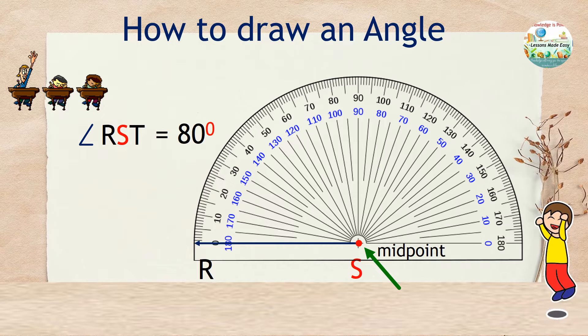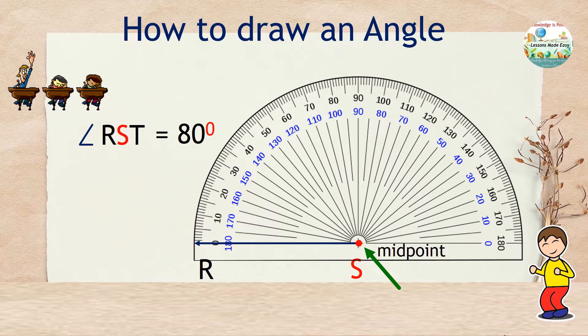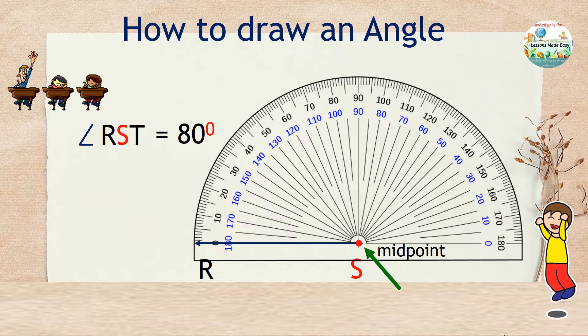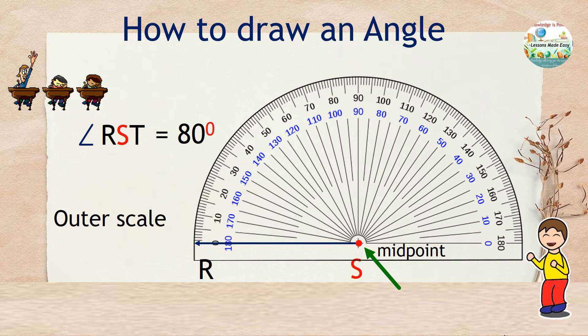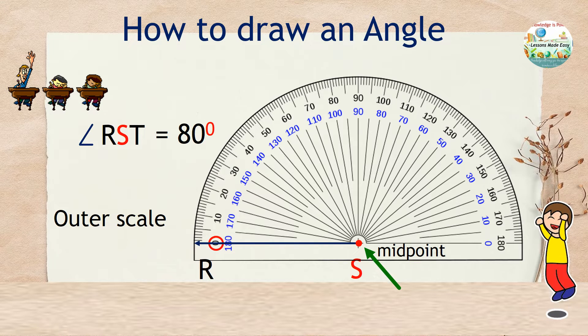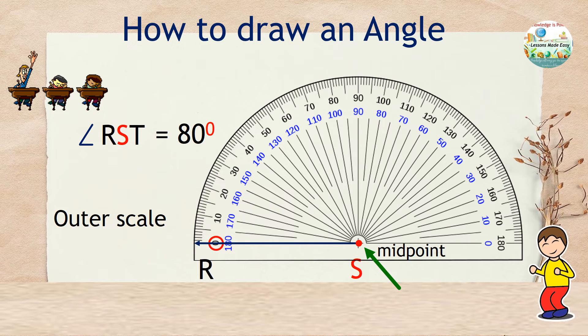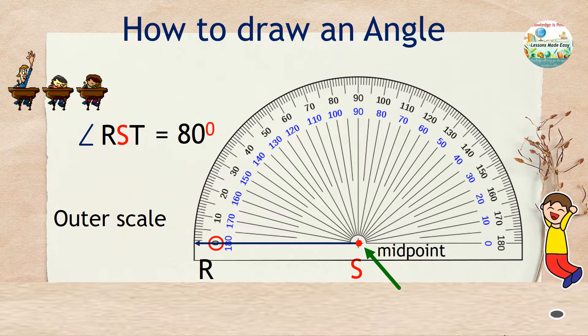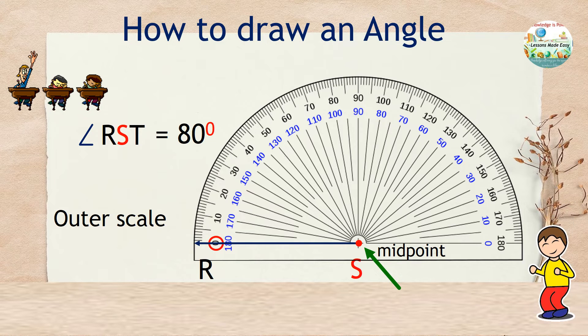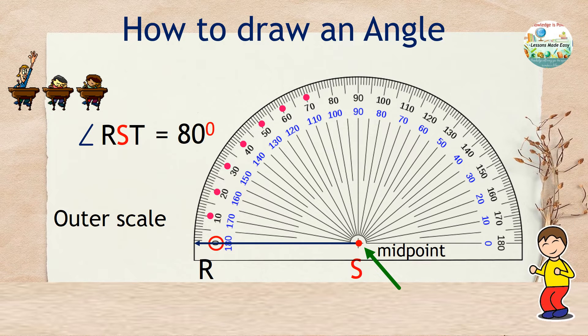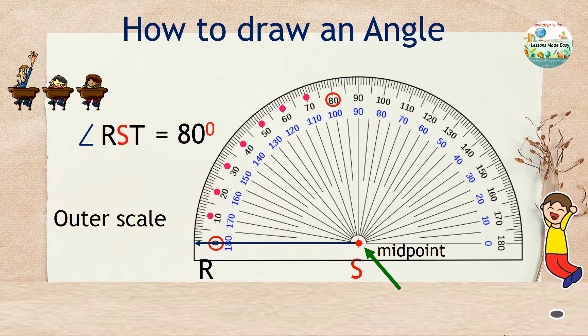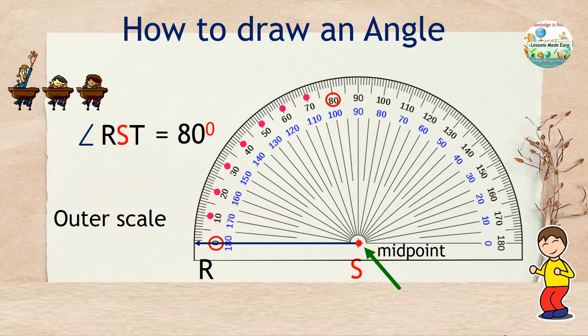Since our ray is pointing towards the left, this means we will use the outer scale in black because that is where we can find 0. And from 0, we keep counting until we reach 80. So we have here 10, 20, 30, 40, and so on until we reach 80. Now we have our desired number.